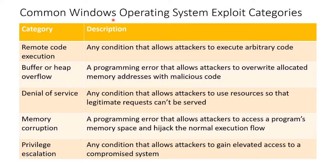You can categorize Windows operating system exploits into some general categories, and most of the exploits are written with these things in mind. Remote code execution is any kind of vulnerability, any kind of condition, that allows an attacker to execute arbitrary code — meaning whatever they want — and from a distance, over the network. That's why they call it remote.